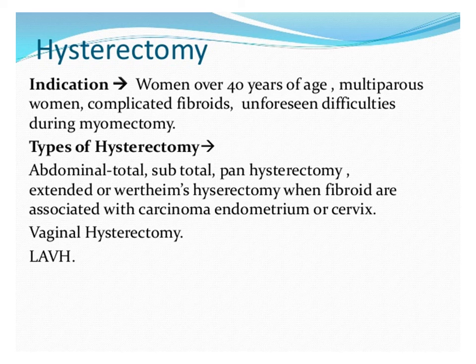Hysterectomy is the ultimate option for treatment of fibroids for women over 40 years of age who are multiparous, not desirous of more children, have complicated or severely symptomatic fibroids, or whose fibroids are difficult to remove due to location. Hysterectomy should most probably be abdominal and total — removing the uterus with the cervix — so total abdominal hysterectomy is preferred over subtotal hysterectomy.